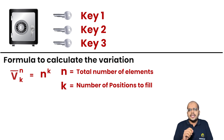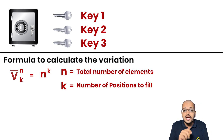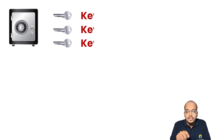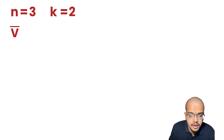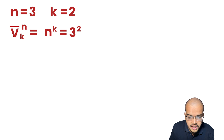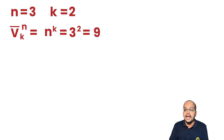Let me give you a basic example so you can clearly understand this variations formula. When talking about variations, we are choosing two values: n and k. Let us consider n equal to 3 and k equal to 2. So V̄³₂ = n to the power of k = 3 to the power of 2 = 9. So there are 9 different variations for this particular example — these are the variations with repetition.